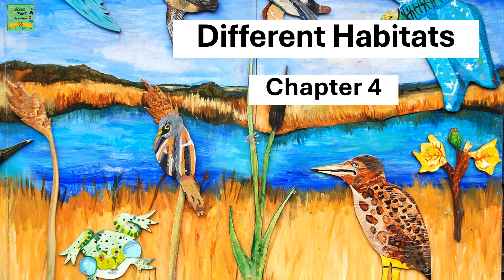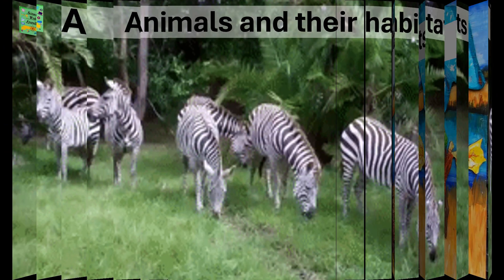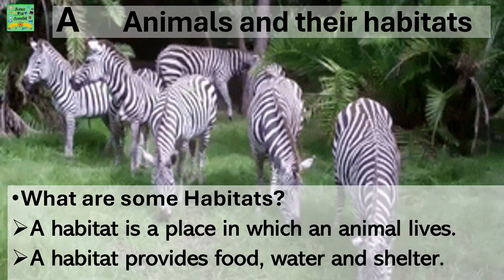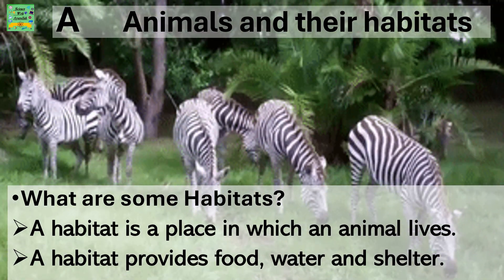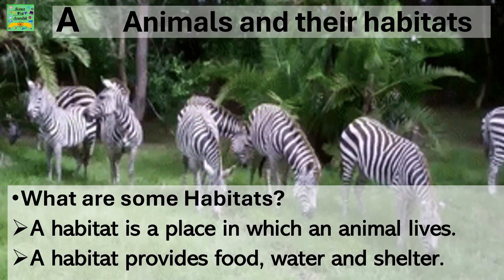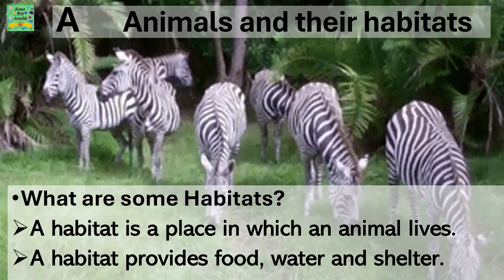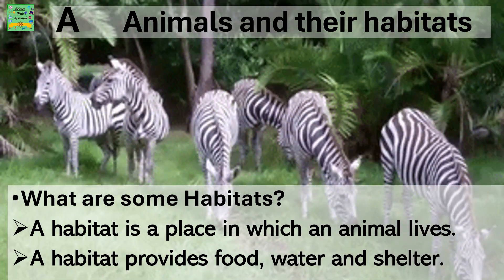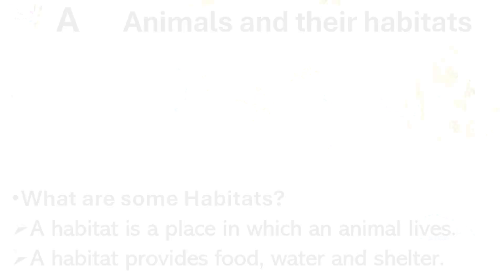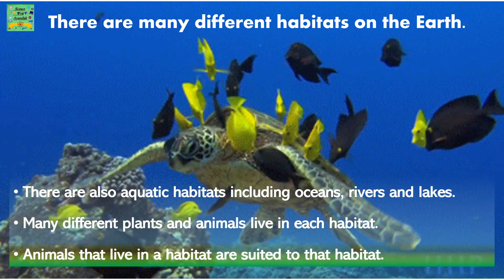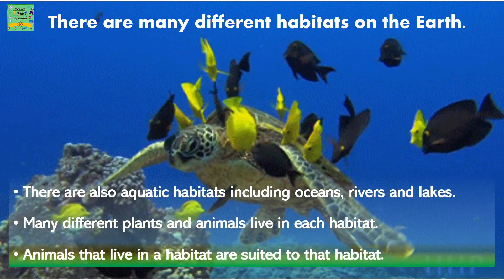Different Habitats, Chapter 4. Part A: Animals and their Habitats. What are some habitats? A habitat is a place in which an animal lives. A habitat provides food, water, and shelter. There are many different habitats on Earth.